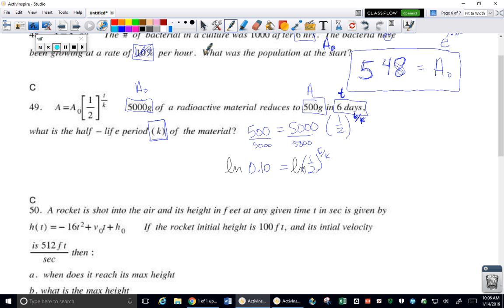So we natural log both sides. We don't do anything to the one half. That would just be ridiculous. We do that so we can bring your exponent to the front. Natural log of 0.10 equals six over K times the natural log of one half, which we'll write as 0.5 to stay consistent. So we're going to divide both sides by natural log of one half.